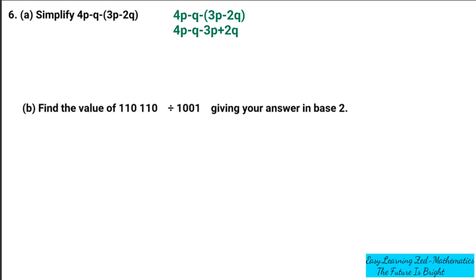Once I've done that, the next thing I'm going to do is put like terms together. So I'm going to write 4p. Then any term that has p, you can see negative 3 there, negative 3p.